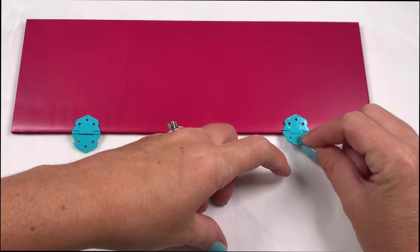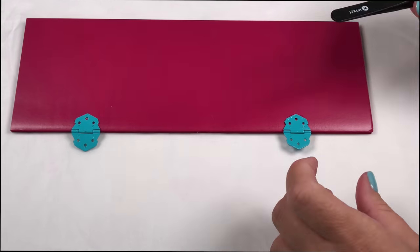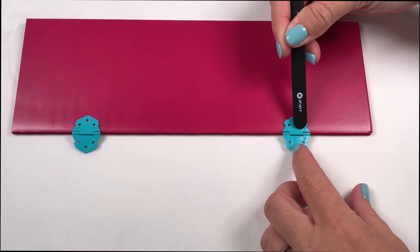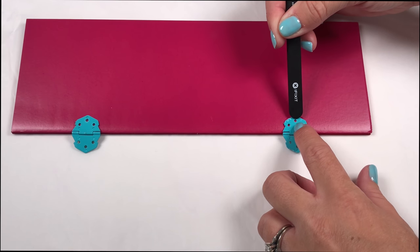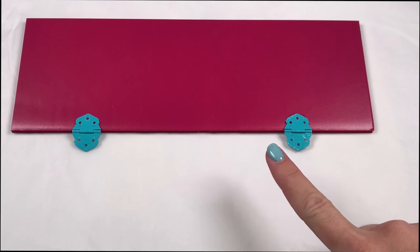And remember, when using super glue, don't touch it with your fingers. So I'm using something to press it to the door without actually having to touch the super glue that seeps out the side. Now let it completely dry before you move it.